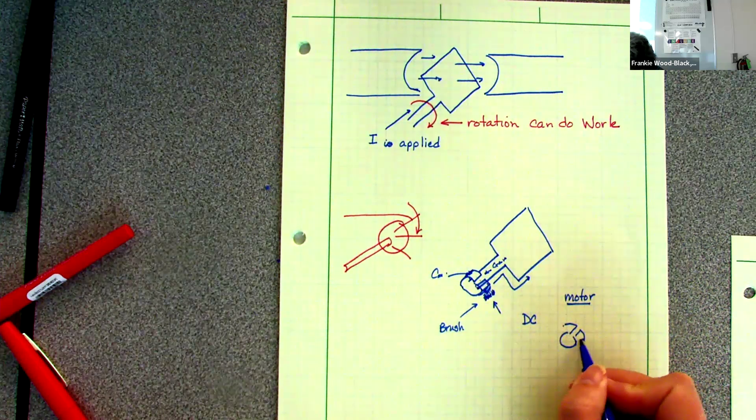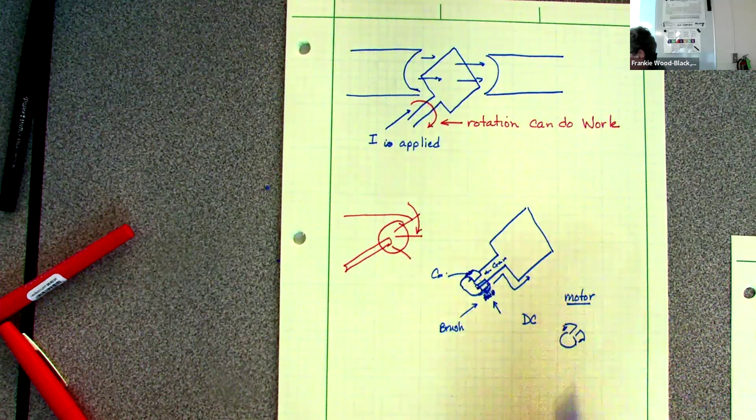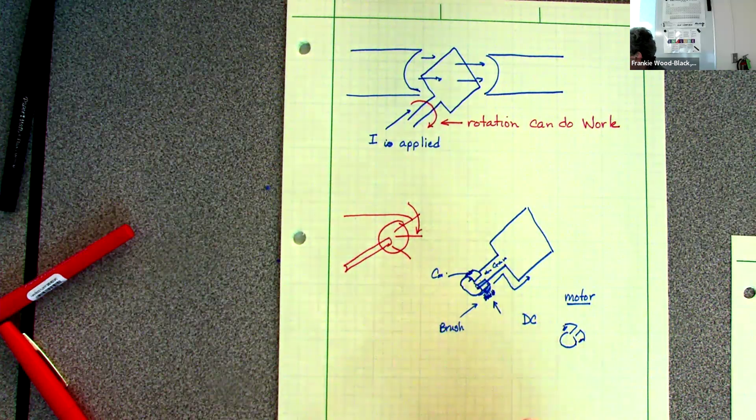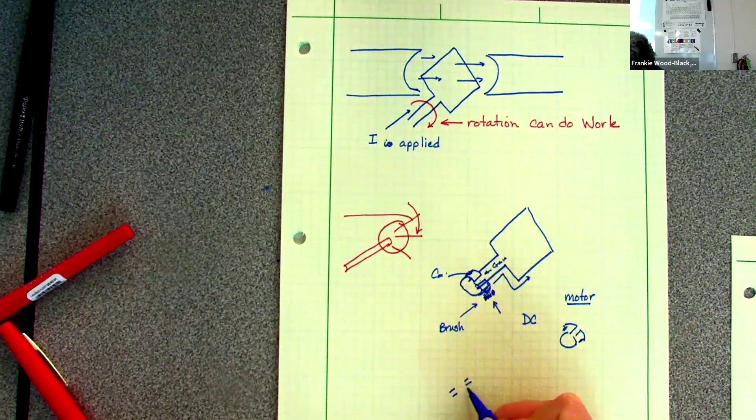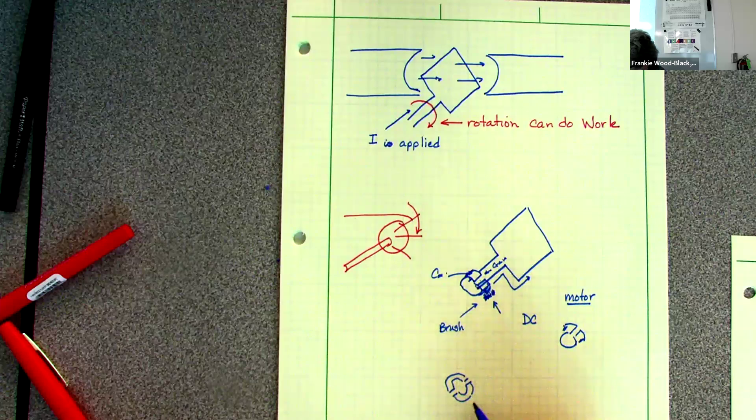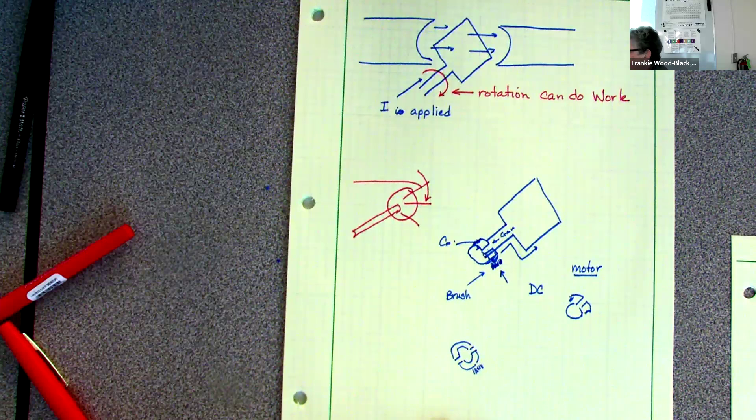Now what's going to happen with an AC is you're going to end up with your collar, you have a gap on both sides. So your collar kind of looks like this. You're still going to have your brushes, but I got two gaps and that's what's going to give me my AC.